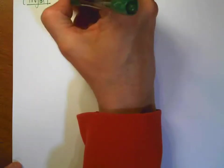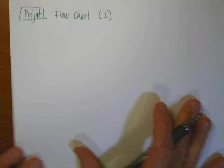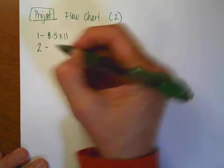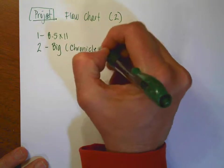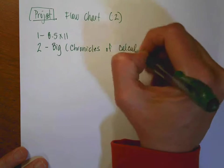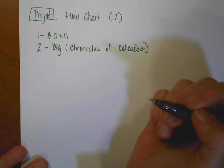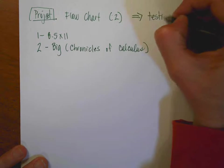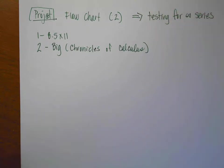So here is going to be your task. You are going to create a flow chart — and you're actually going to create two of them. You're going to do one that's 8.5 by 11, and then you're going to do a second that is big — by big, I mean like Chronicles of Calculus big, maybe about half of those — so it's going to be on a big sheet of paper. What you're going to do is create a flow chart that explains the process of testing for our infinite series.